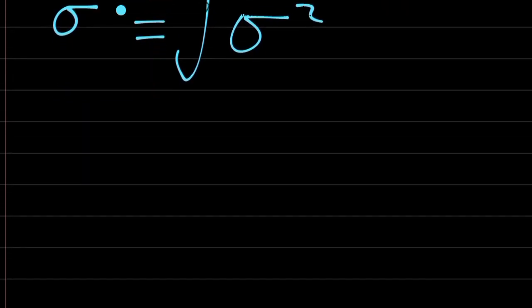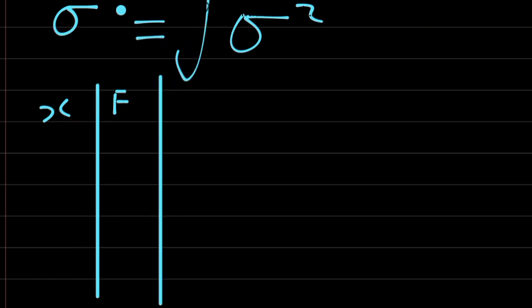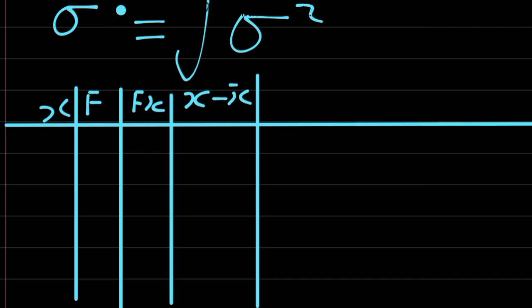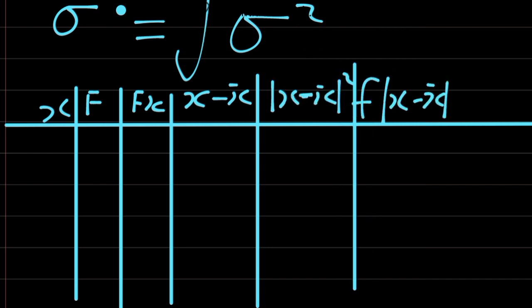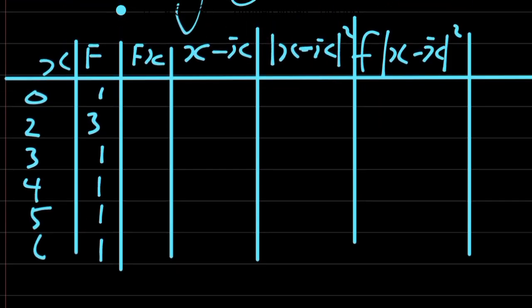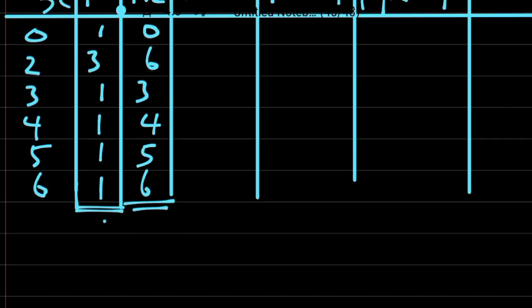I would like to follow the frequency table format: x, frequency, fx. Let's evaluate our f of x. 0, 6, 3 times 1 is 3, 4, 5, 6. Summation of our frequency is actually 8.